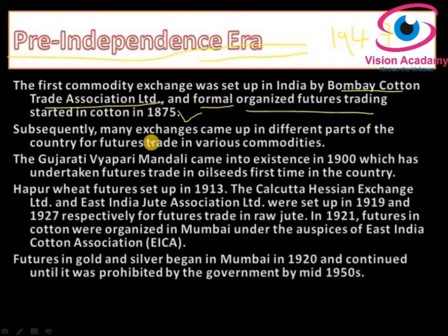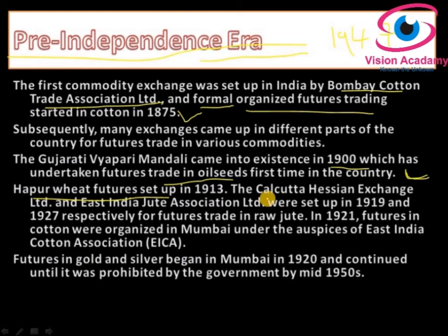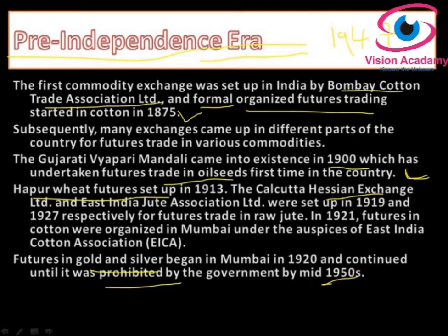Subsequently, many exchanges came up in different parts of the country on futures trade in various commodities such as potato and onion. At the end of the 19th century, the Gujarati Vipari Mandali came into existence in 1900 and undertook futures trade in oil seeds for the first time in the country's history. Hapur Wheat Futures was set up in 1913, followed by the Kolkata Hessian Exchange Limited and East India Jute Association Limited. Futures in gold and silver began in Mumbai in 1920.